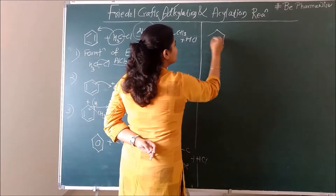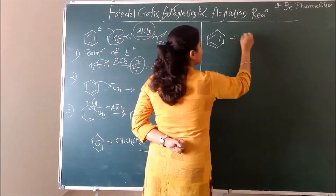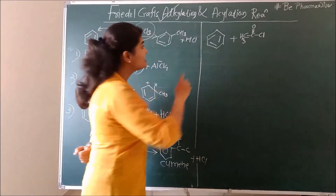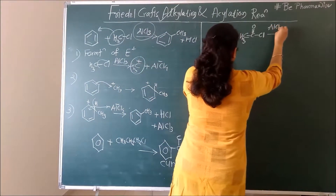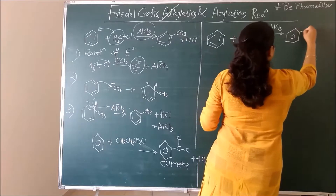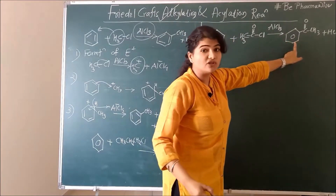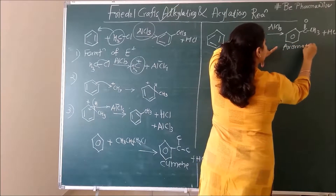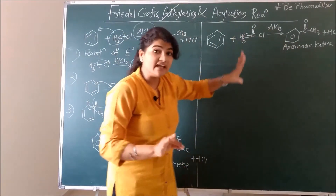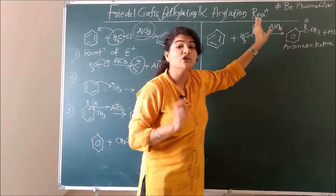Now I will tell you what happens in Friedel-Crafts acylation. Benzene reacts with acid chloride or acid anhydride — for example, CH3COCl, acetyl chloride or ethanoyl chloride — in presence of AlCl3. The COCH3 group attaches to benzene, giving you an aromatic ketone plus HCl. This product is called acetophenone. So Friedel-Crafts acylation yields aromatic ketones.